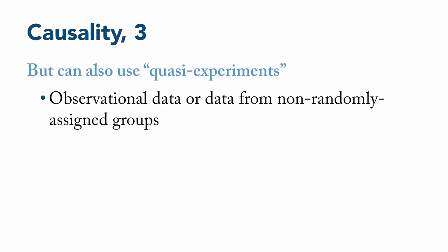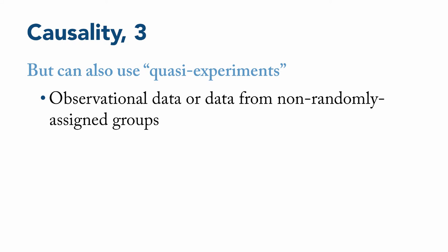First, observational data, or data from non-randomly assigned groups, is gathered, or may already exist from archival records, and then methodological and or statistical controls to adjust for bias in estimating causal effects. Quasi-experiments can be difficult to do well, but they can also be used in a huge variety of circumstances where standard experimental methods would be difficult, unethical, or impossible to do.